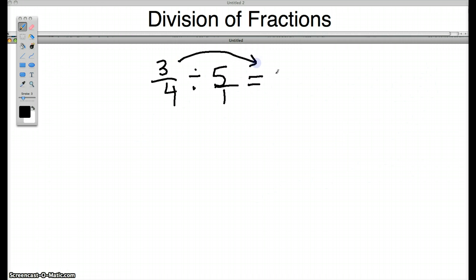Remember, I copy the first fraction, 3/4, and I multiply by the reciprocal of the second fraction, so that becomes 1/5. Remember to look diagonally to see if you can reduce at all. We've got 3 and 5. We've got 1 and 4. I don't see any way to divide any of those by the same number. So I'm going to go ahead and multiply. 3 times 1 is 3. 4 times 5 is 20. And there's no way to simplify 3/20, because I can only divide 3 by 3, and I can't divide 20 by 3. And so the answer is 3/20.